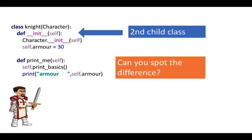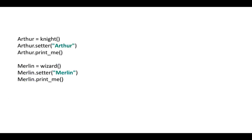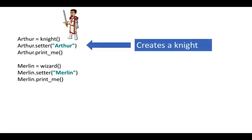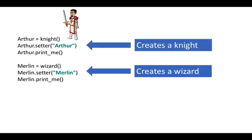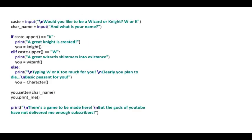Second child class, can you spot the difference? Hopefully by now you can see that the difference is armor. Here is our knight. Created a knight there. And then we create a wizard, Merlin. And let's have a look at this. And so what we've done is we're going to create your character. Would you like to be a wizard or a knight? W or K, and what's your name?